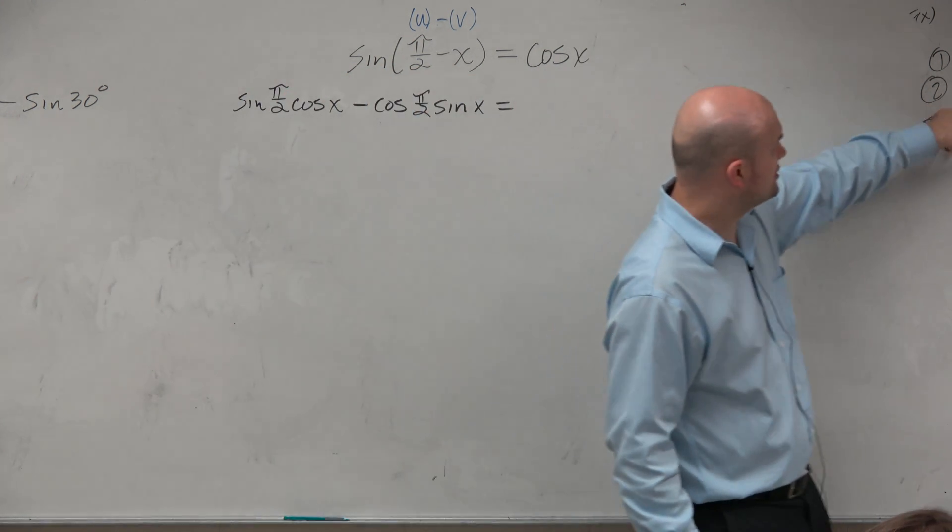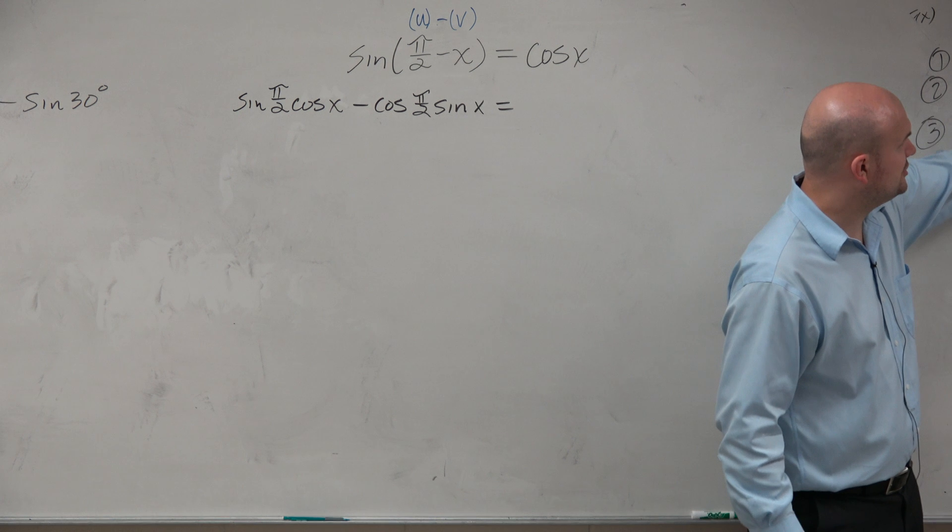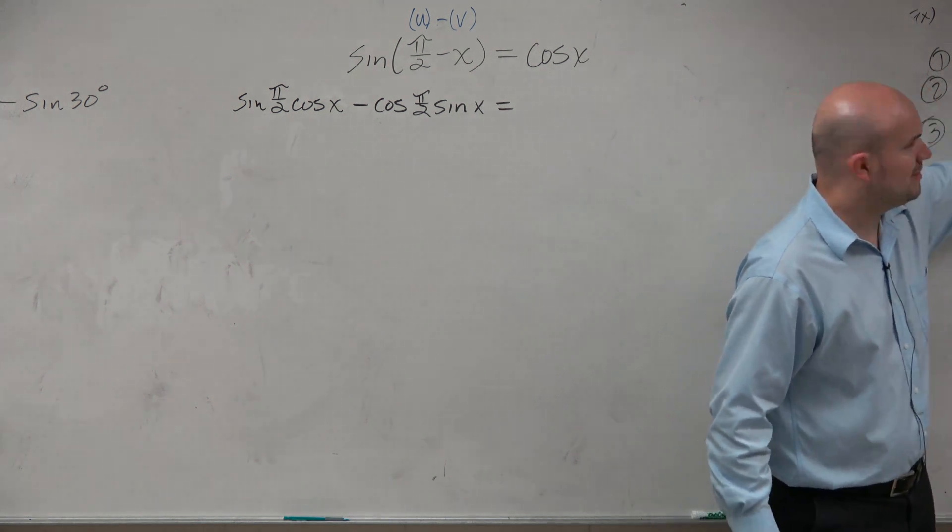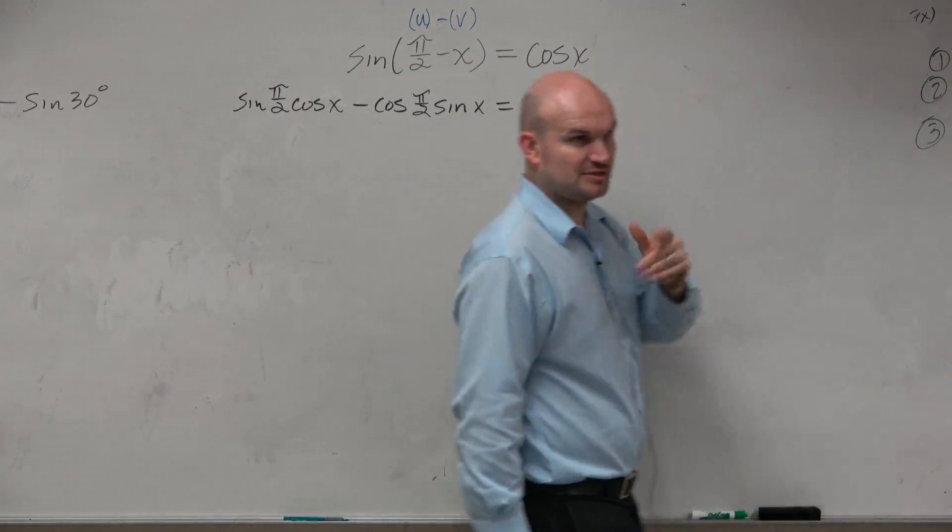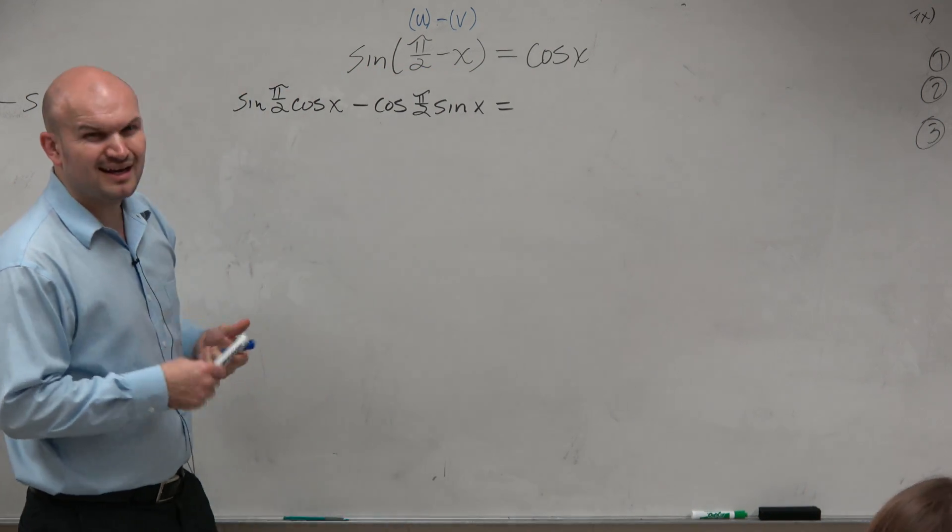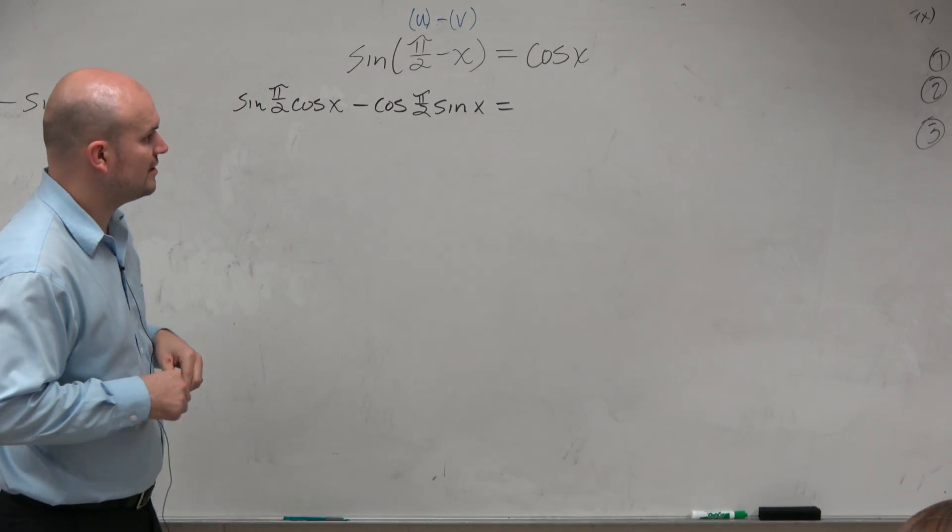So for cosine, when it's u plus v, you subtract. If it's u minus v, you add. They're just switched. And we'll go over cosine and tangent formulas, so you'll see how it works. But now let's simplify this.